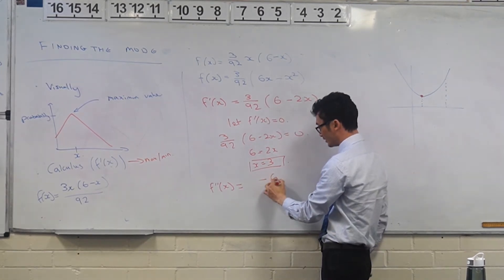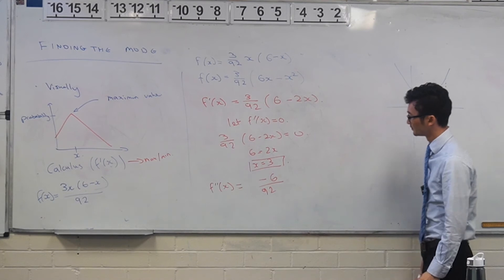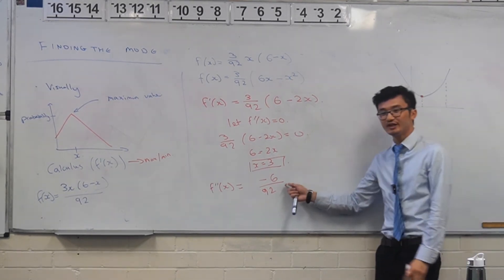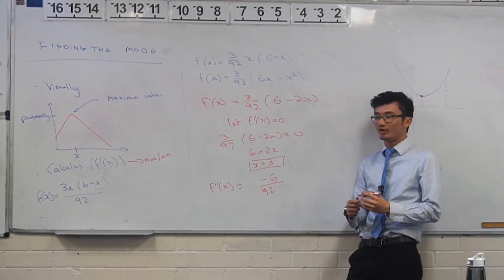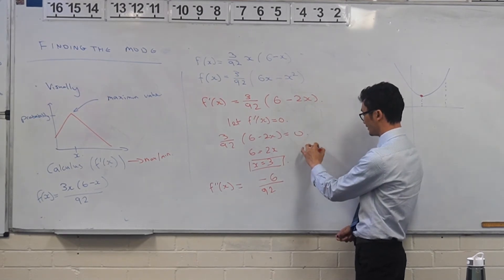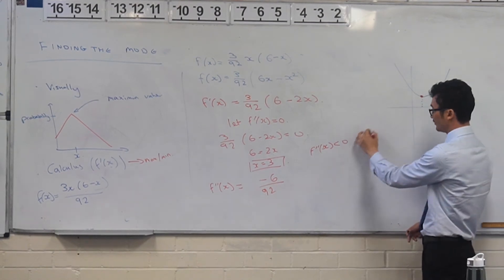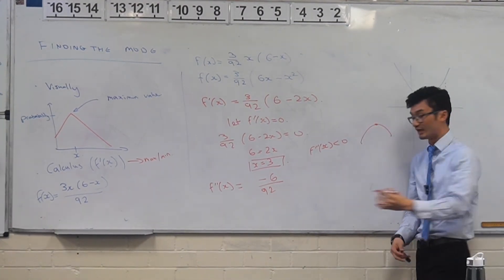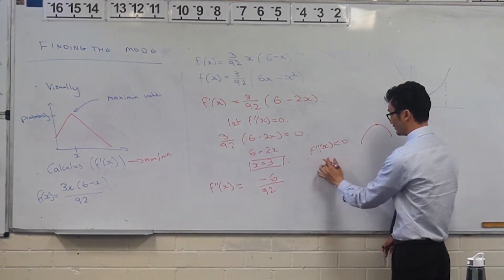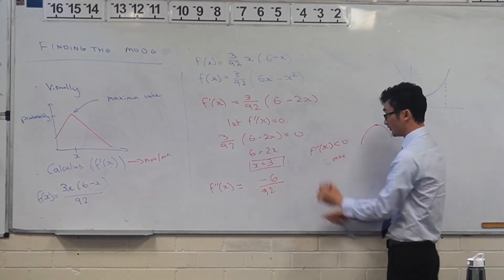I think it's just gonna be a constant. If you differentiate, because this is just a constant here, this one here is just one variable, so it's just gonna become minus 6/92 potentially.